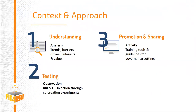Fit4RI works on three strands. The first is the analytical strand: understanding which trends, barriers, drivers, interests and values influence the adoption of RRI and open science, and whether sectors and national contexts play a role. The second is the testing strand: observing RRI and open science in action through four co-creation experiments to find possible solutions in terms of training approaches and governance settings. The third is the proactive strand: promoting changes, developing training tools and evidence-based guidelines and governance settings.